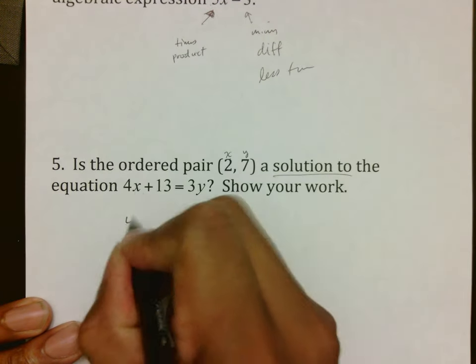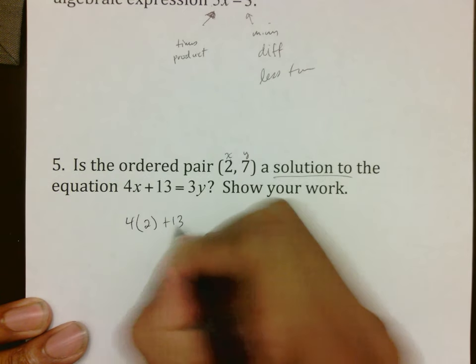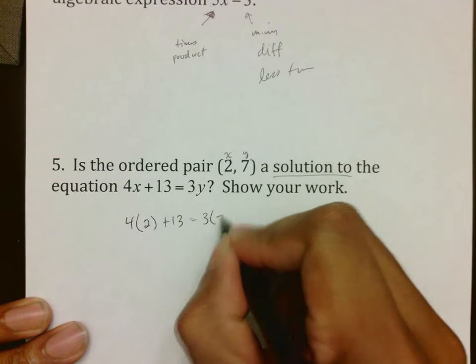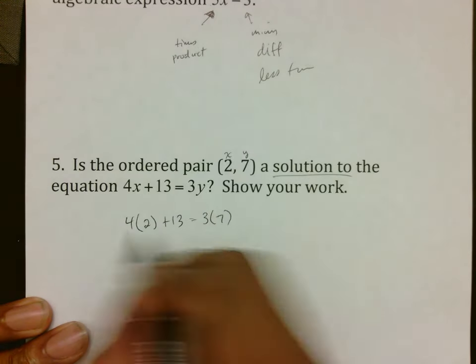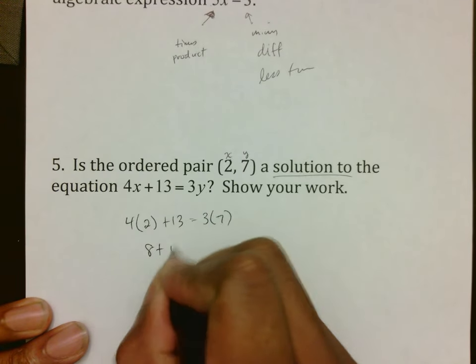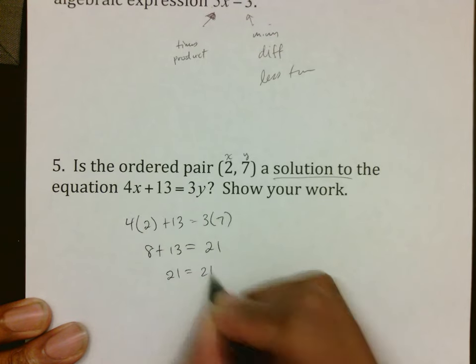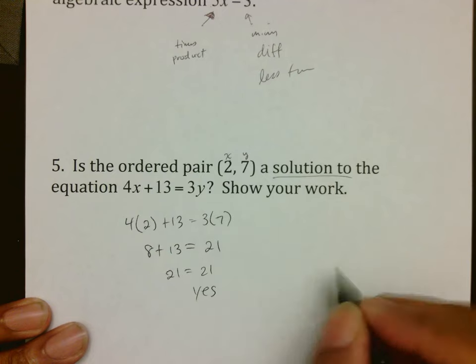Which means, take this thing here and use parentheses. 4 times x, which is 2, plus 13 equals 3 times y, which would be 7. Do your order of operations on one side. 4 times 2 turns into 8 plus 13 is 21, the right side turns into 21. You get 21 on the left, 21 on the right, so your answer is yes.